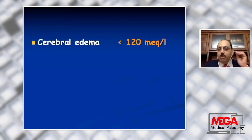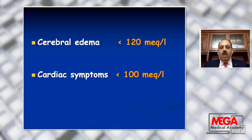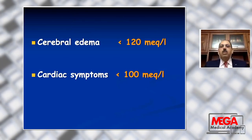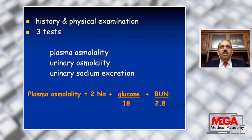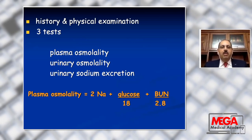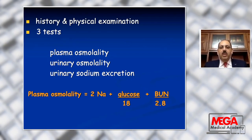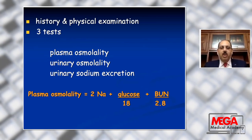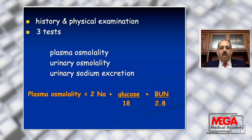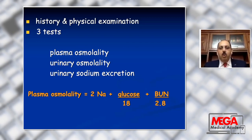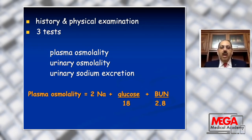Cerebral edema occurs if sodium level is below 120 milliequivalent per liter, and cardiac symptoms may occur if the sodium level is below 100 milliequivalent per liter. To reach the diagnosis by history and physical examination: history of losses through vomiting, diarrhea, fistula, or history of renal failure, history of endocrinal disease, and physical examination to assess the volume status. Three tests should be done: first, plasma osmolality, which is very important to differentiate true hyponatremia from false hyponatremia where plasma osmolality is normal or increased. Also, urinary osmolality and urinary sodium excretion.